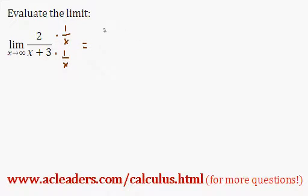So right here, we have limit as x approaches infinity of 2 times 1 over x, which is just 2 over x, all over.